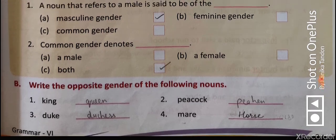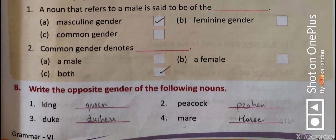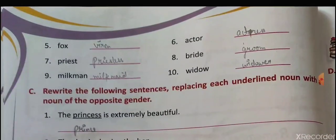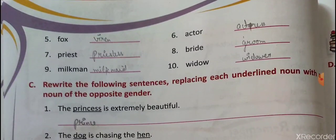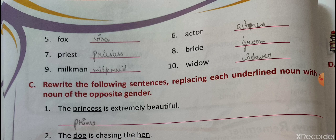Question number two: write the opposite gender of the following. If masculine gender is given, write feminine, and vice versa. King becomes queen, peacock becomes peahen, duke becomes duchess, fox becomes vixen, actor becomes actress. Make sure you write 'actress' correctly — it is A-C-T-R-E-double-S because the vowel 'o' is removed. Priest becomes priestess, bride becomes bridegroom.